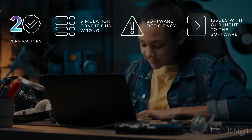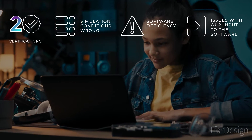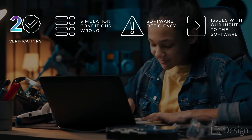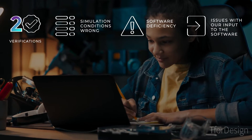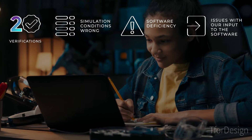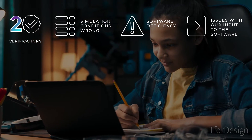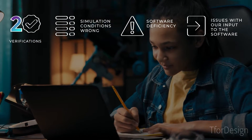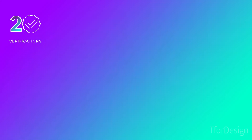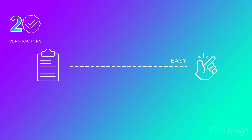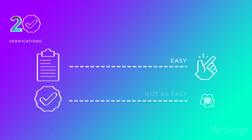Some methods used to help include quickly inspecting and spotting non-reasonable results, and benchmarking with hand calculations. So getting some type of results is easy, but being able to verify those results is not as easy.